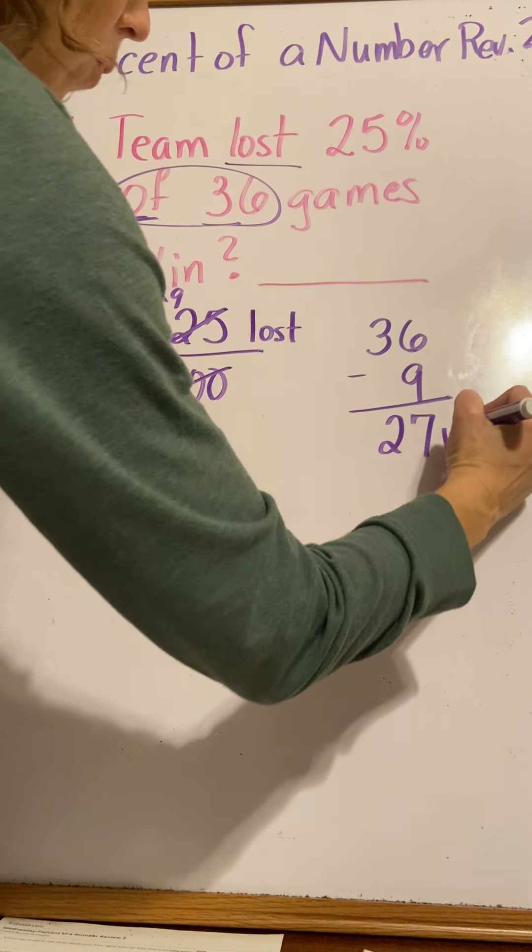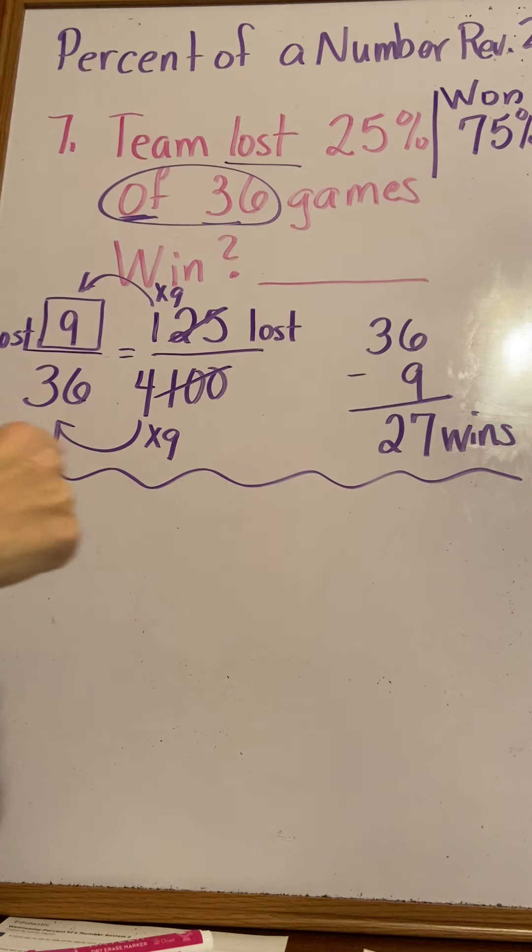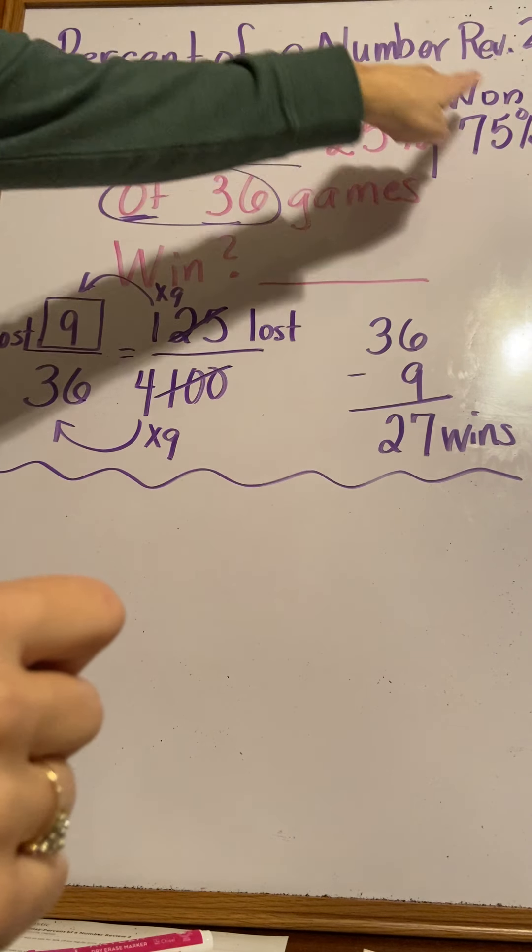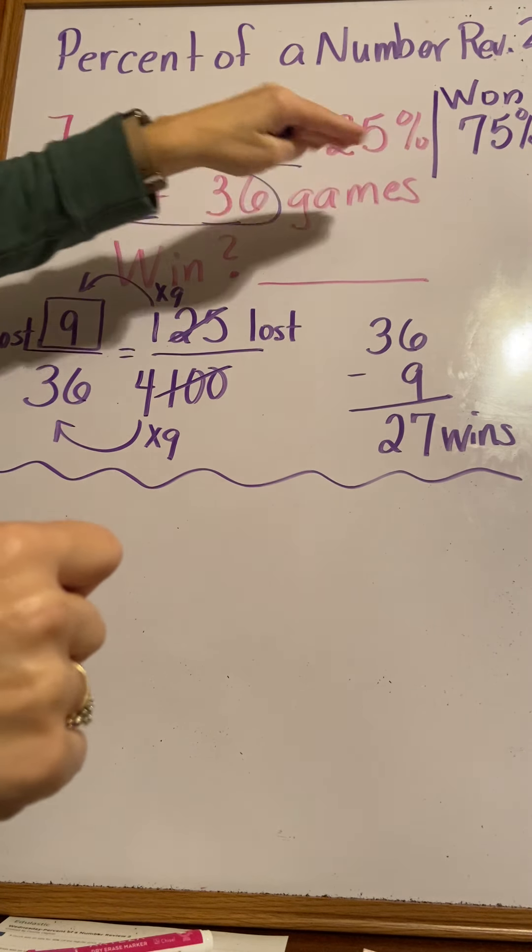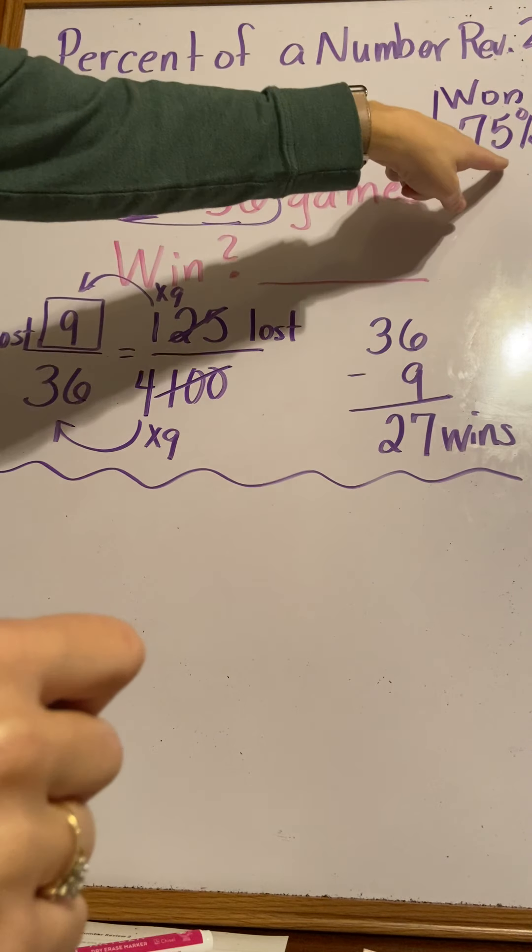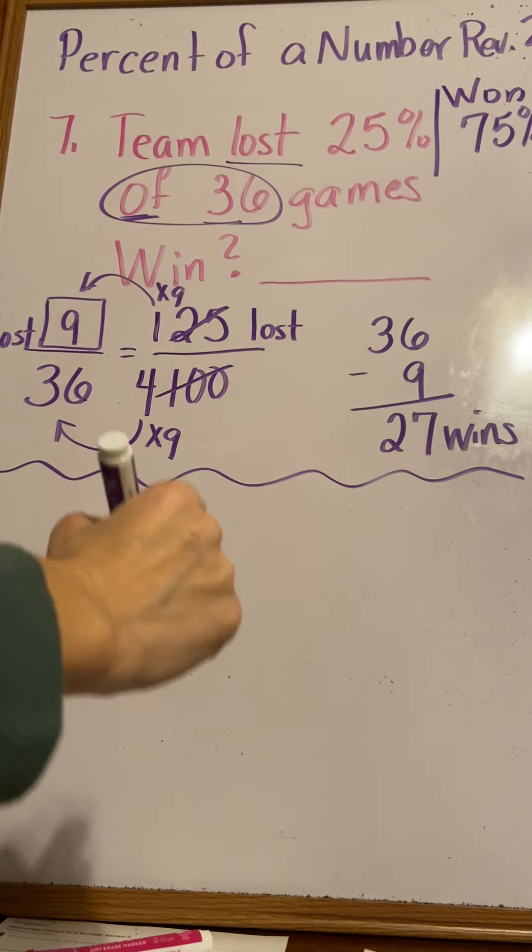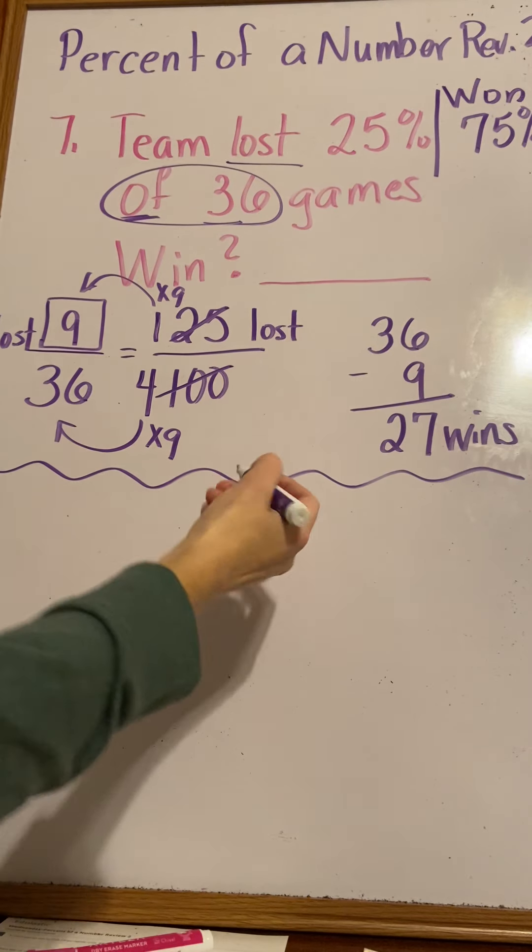There's a second way. We could say, well, if they lost 25% of their games, then that means they won 75% of their games, because that's got to add up to 100 - that's got to add up to all their games. I could do it a second way.